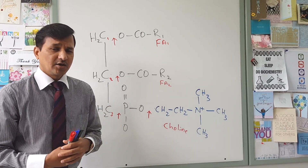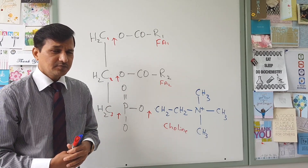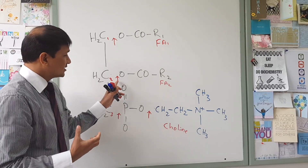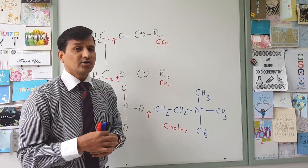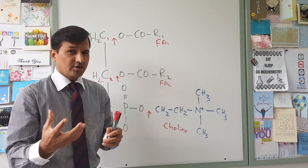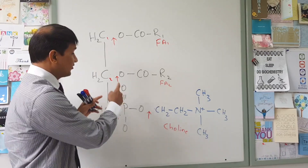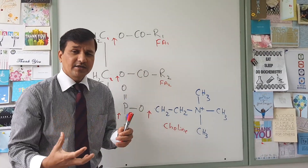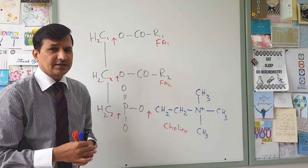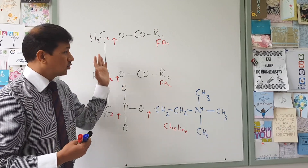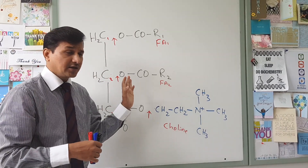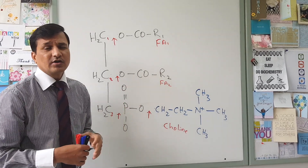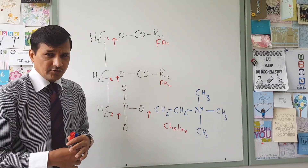They will undergo a turnover and recycling process in our body. Phospholipase A2 is inhibited by corticosteroids. Corticosteroids inhibit phospholipase A2, thereby decreasing the release of arachidonic acid, which is bound to glycerophospholipid at the second carbon of glycerol. That is how steroids work.